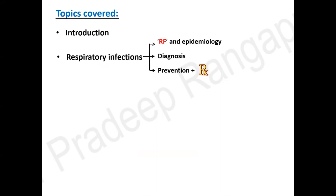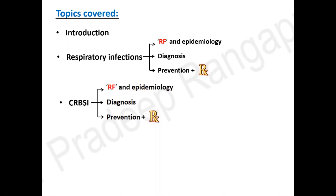The topics I'll be covering include an introduction. Infections in neurocritical care are very important because they tend to be more common in neuro patients, especially since the risk of infection is inversely proportional to the GCS — the lower the GCS, the higher the risk. I'll cover respiratory infections, risk factors, epidemiology, diagnosis, prevention, and treatment, followed by CRBSI, catheter-associated UTI, and external ventricular device infections.